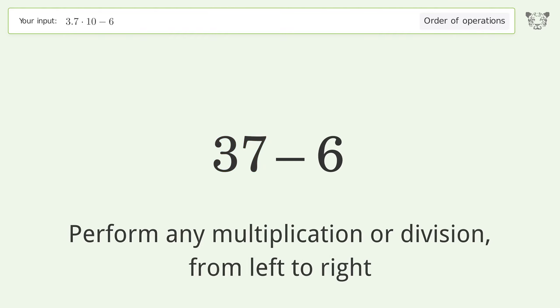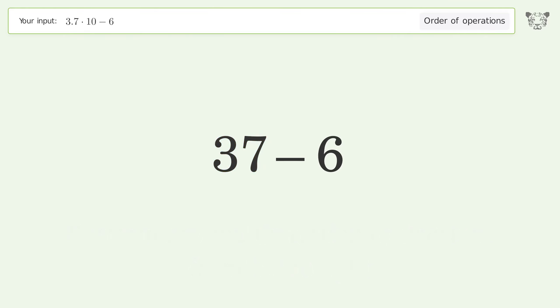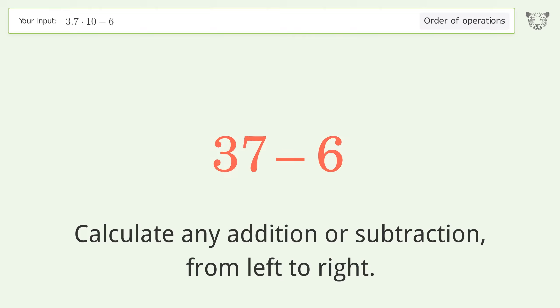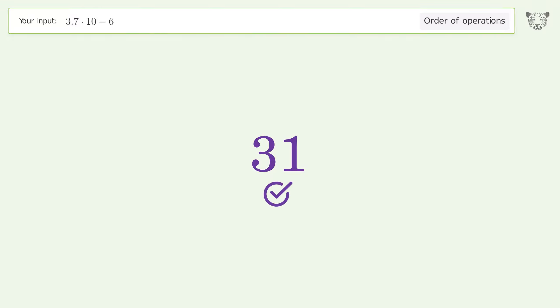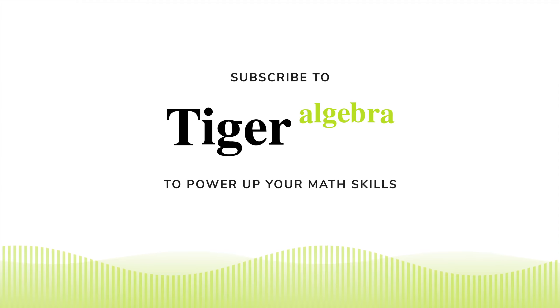First, perform any multiplication or division from left to right: 3.7 times 10 equals 37. Then, calculate any addition or subtraction from left to right: 37 minus 6 equals 31. And so the final result is 31.